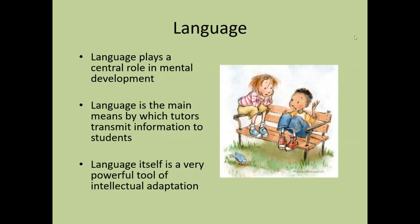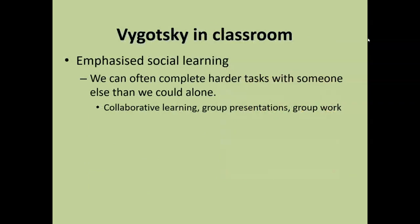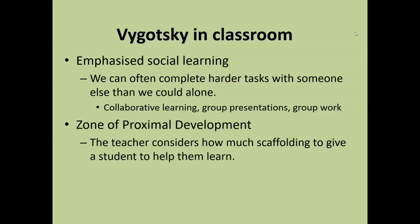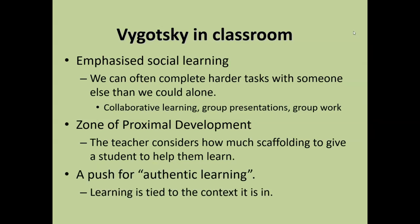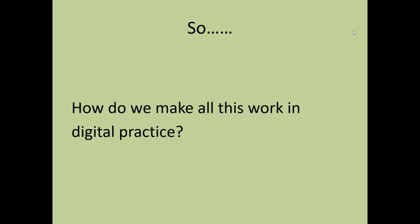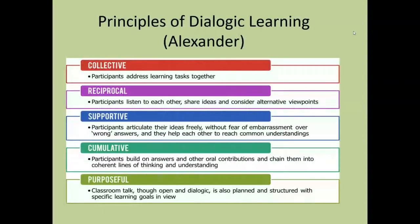So that's a quick skim through Vygotsky. In the classroom, he says we need to do lots of social learning. We need to be doing harder tasks with somebody else because we can do those in groups — collaborative learning, group presentations, group work. The zone of proximal development means the teacher has to consider how much scaffold you give a student, and things should be tied to the context they're in — authentic learning is really important. This is where I bring in dialogic learning, because Robin Alexander has come up with five principles.